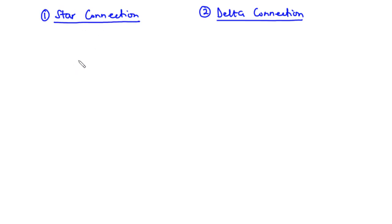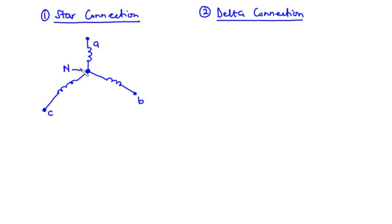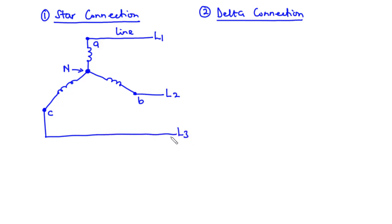For the star connection, it is made up of three windings connected at a common point called the neutral point. We have terminals A, B, and C, and the common or neutral point N, which is used for grounding or earthing. The conductors connected from terminals A, B, C of the generator to its load are called lines — line one, line two, and line three. The phase voltages are VA, VB, and VC.